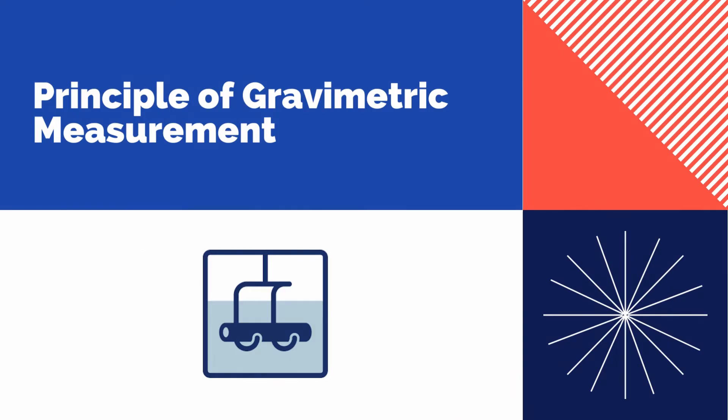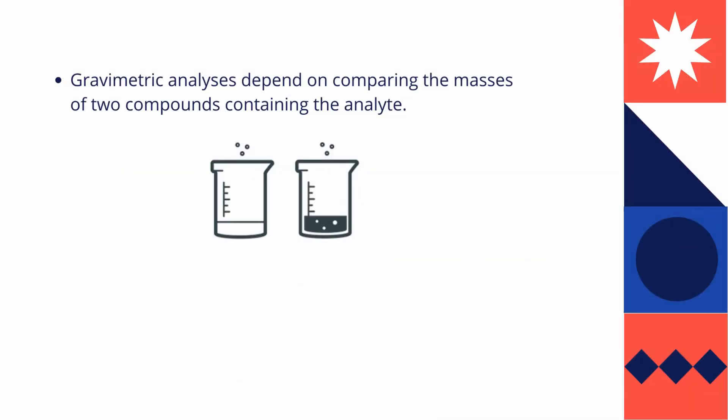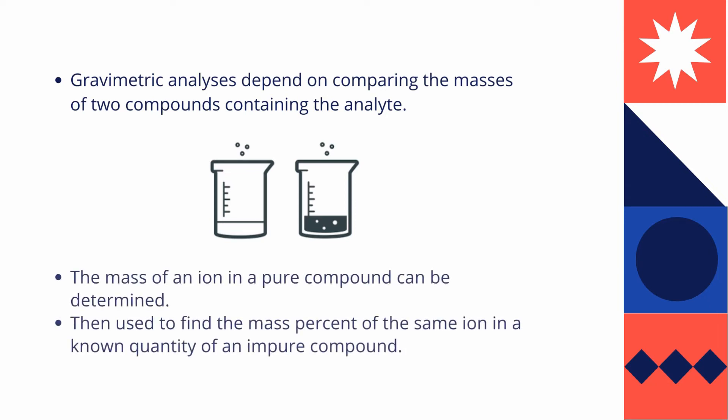The principle of gravimetric measurement: gravimetric analysis depends on comparing the masses of two compounds containing the analyte. The principle is that the mass of an ion in a pure compound can be determined and then used to find the mass percent of the same ion in a known quantity of an impure compound.